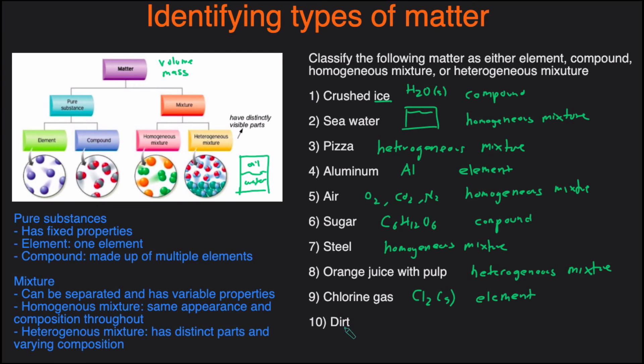And then the last one, dirt. Dirt, that is going to be a heterogeneous mixture. And again, this one is a little arguable. You can argue that if we were to go and pick up two handfuls of dirt, perhaps I might have some rocks or some wood chips in mine. And then if you were to grab some, you might see some worms or some clumps of dirt. So you can argue that it has distinct parts, so we can argue that it is a heterogeneous mixture.